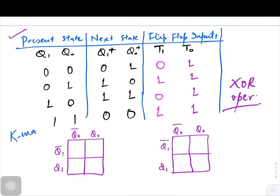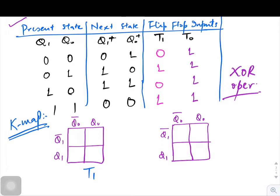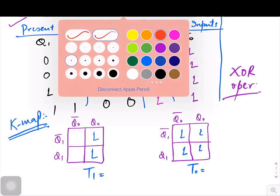Now the next step is K-map. Let us start with the K-map, so there would be two K-maps: one would be for T1 and the other one would be for T0. So let us fill these values in the K-map. So it is 0, 1, 0, 1, and the other one is all ones.